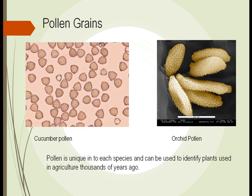Another way we can look is at pollen grains, shown here at huge magnification. We look in the spring and the fall — the trees, bushes, and plants all have pollen out there. Pollen is part of the sexual reproduction of the plants, and the plants try to disseminate it as far as possible. Pollen is very long-lasting, and each pollen is a little different. For example, cucumber pollen versus orchid pollen — it's unique to each species and allows us to identify what plants were in a particular area at what time.